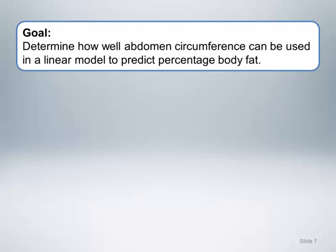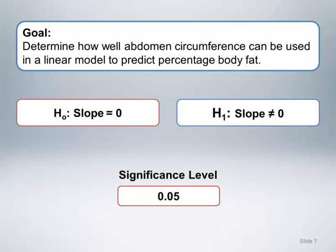Our research goal is to determine how well abdomen circumference can be used in a linear model to predict percentage body fat. This is completely determined by the slope of the regression line. If the slope of the line is zero, that means the predicted value of Y will always be the same no matter what the value of X. In other words, a slope of zero indicates that there is no predictive relationship between X and Y. Thus, our null hypothesis is that the slope is zero versus the alternative hypothesis that the slope is non-zero. Note that a negative slope indicates that X and Y are inversely related — as X tends to decrease, Y tends to increase, and vice versa. A positive slope indicates that X and Y are directly related, meaning X and Y tend to increase or decrease together.